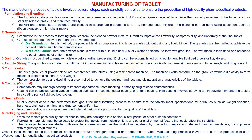Quality control. Quality control checks are performed throughout the manufacturing process to ensure that the tablets meet specifications for attributes such as weight variation, hardness, disintegration time, and drug content uniformity. In-process testing and sampling are conducted at various stages to monitor the quality of the tablets.